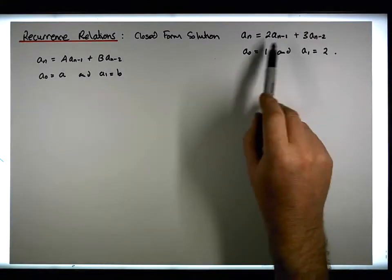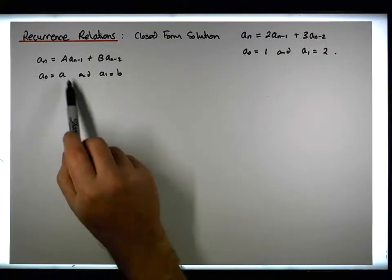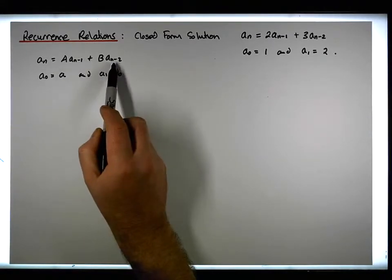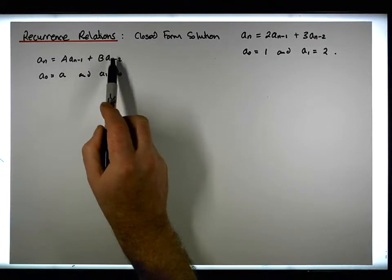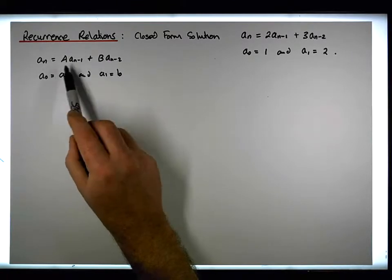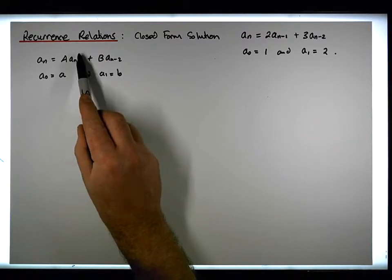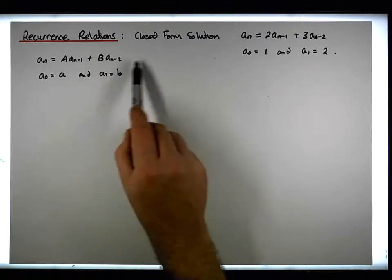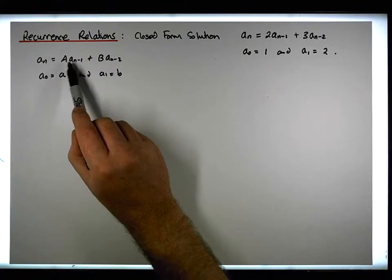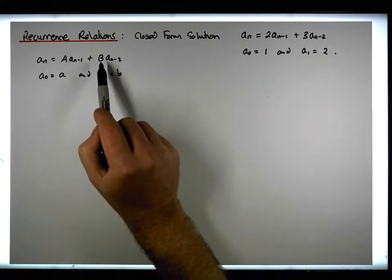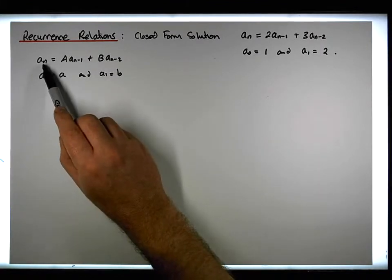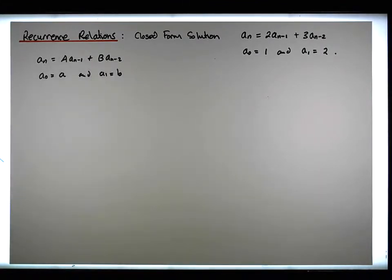This particular recurrence is linear in the sense that each of the preceding terms — aₙ₋₁ and aₙ₋₂ — are only part of terms on their own. It's homogeneous because each of the preceding terms are raised to the same power, with no other term having a higher power. It has constant coefficients A and B — in this case 2 and 3. And it's of degree 2 because the nth term is defined in terms of the previous two terms.